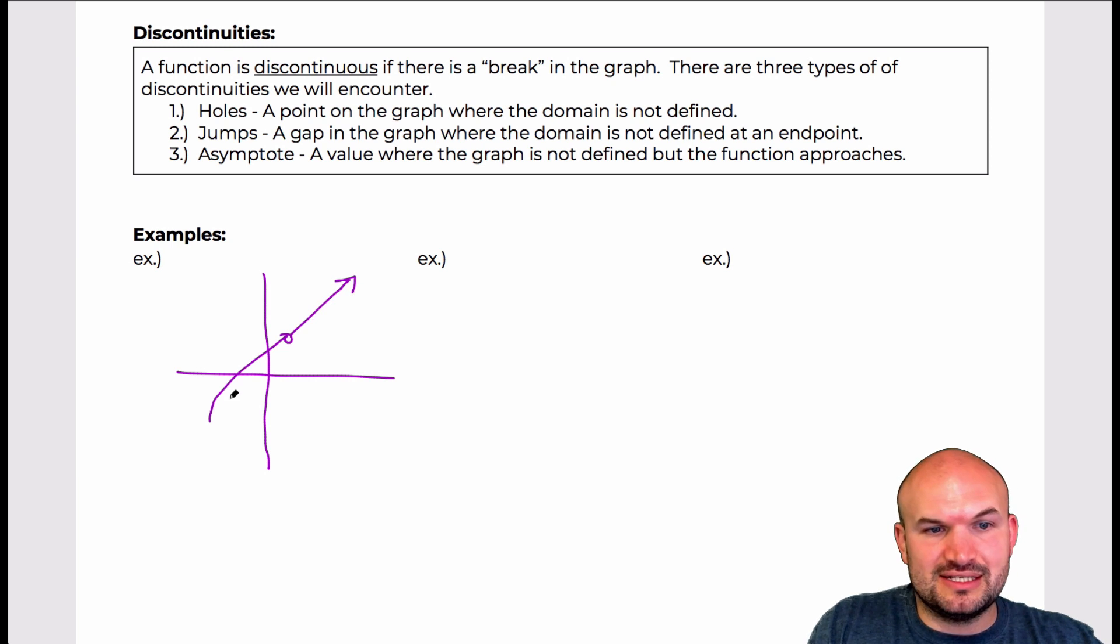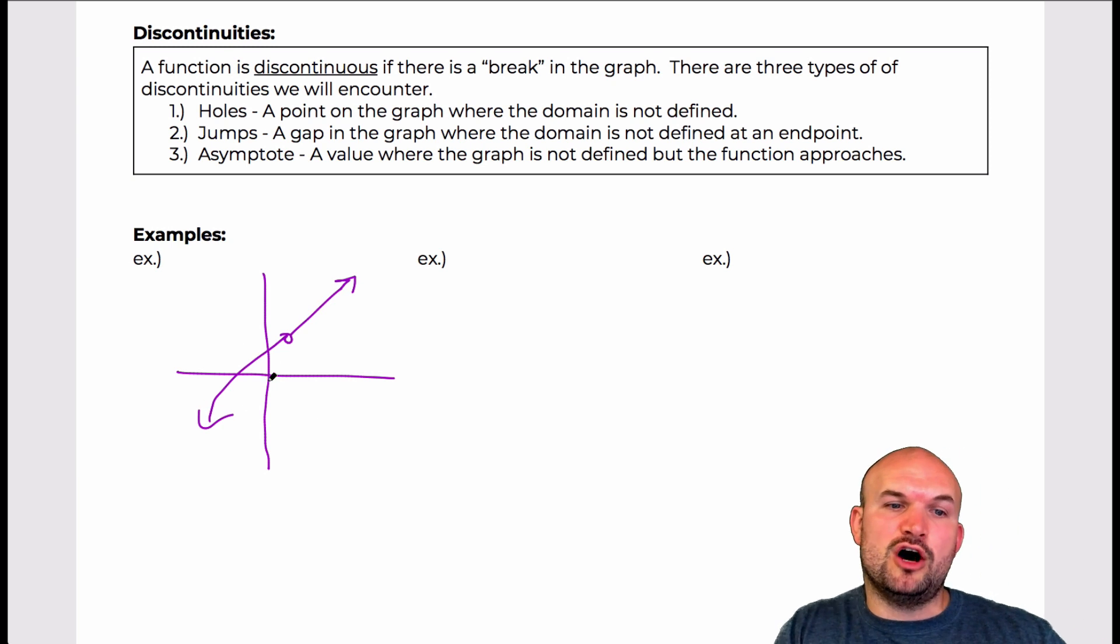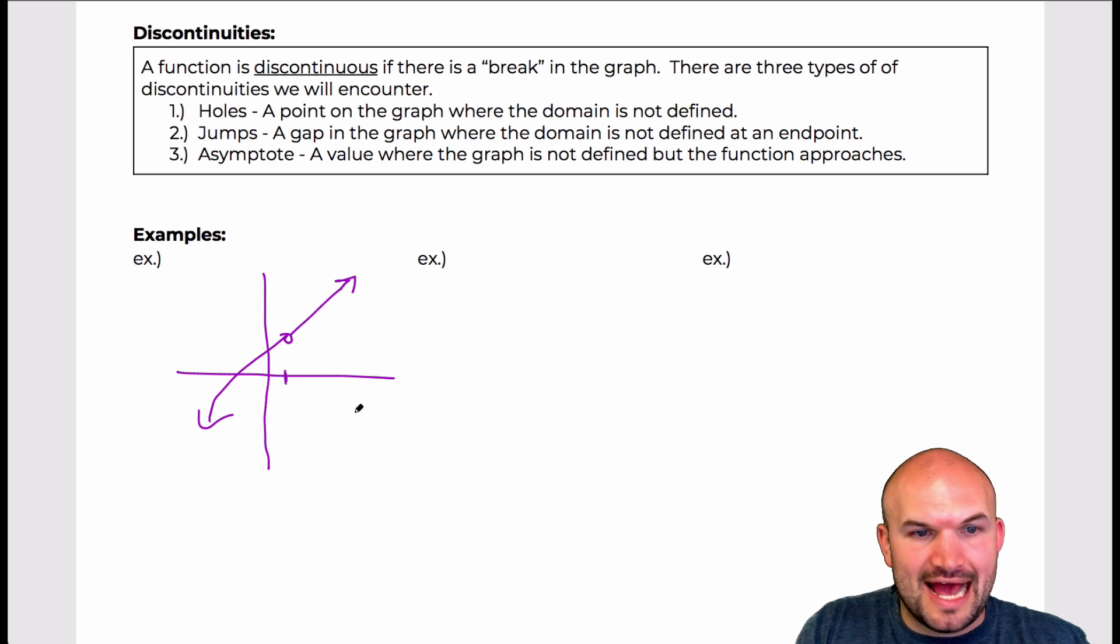An example of a hole here is basically a graph that has a hole in it. Basically what that means is it's like a function that's defined for all values, except at that one x value there's an undefined value. I think it makes a little bit more sense once we algebraically look at where holes occur. But for right now, you see a graph and you see a little hole, then you say it's undefined at that value.